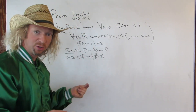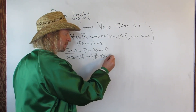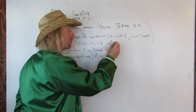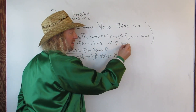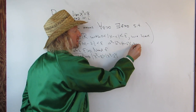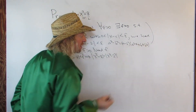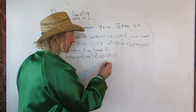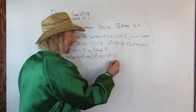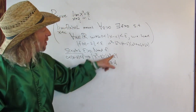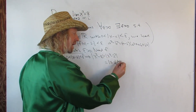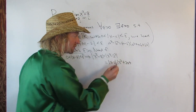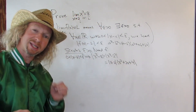The natural thing to do here is use the difference of cubes formula. You can write this as x cubed minus 2 cubed. Recall the difference of cubes formula: a cubed minus b cubed equals (a minus b)(a squared plus ab plus b squared). Applying it to x cubed minus 2 cubed with a equal to x and b equal to 2, this equals the absolute value of x minus 2, times the absolute value of x squared plus 2x plus 4. And we want this to be less than epsilon.